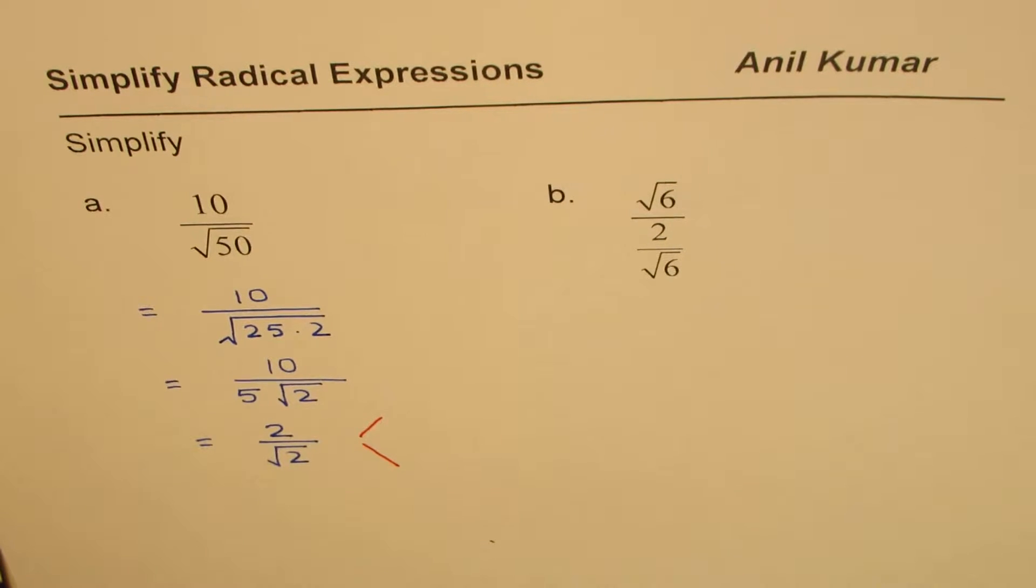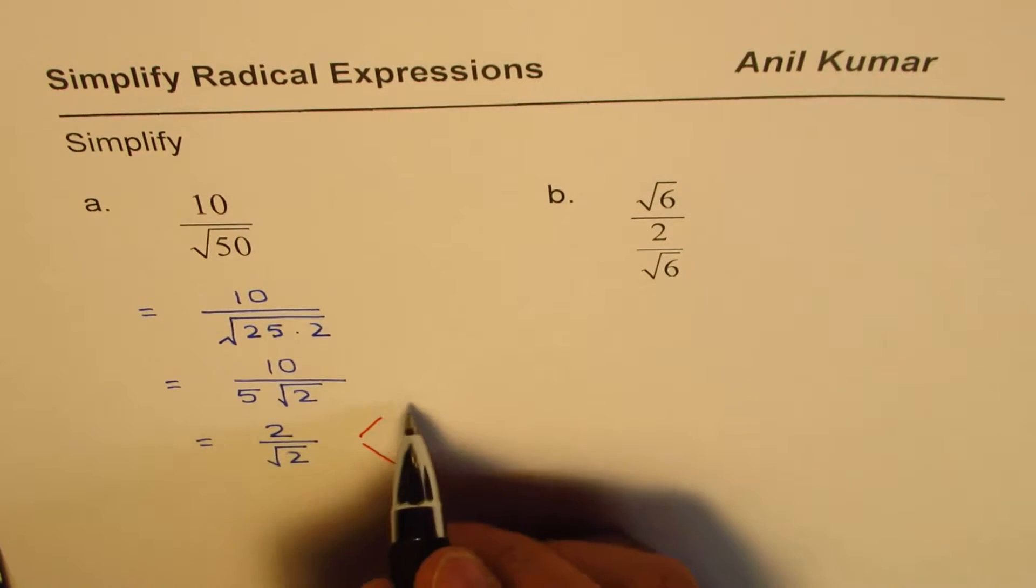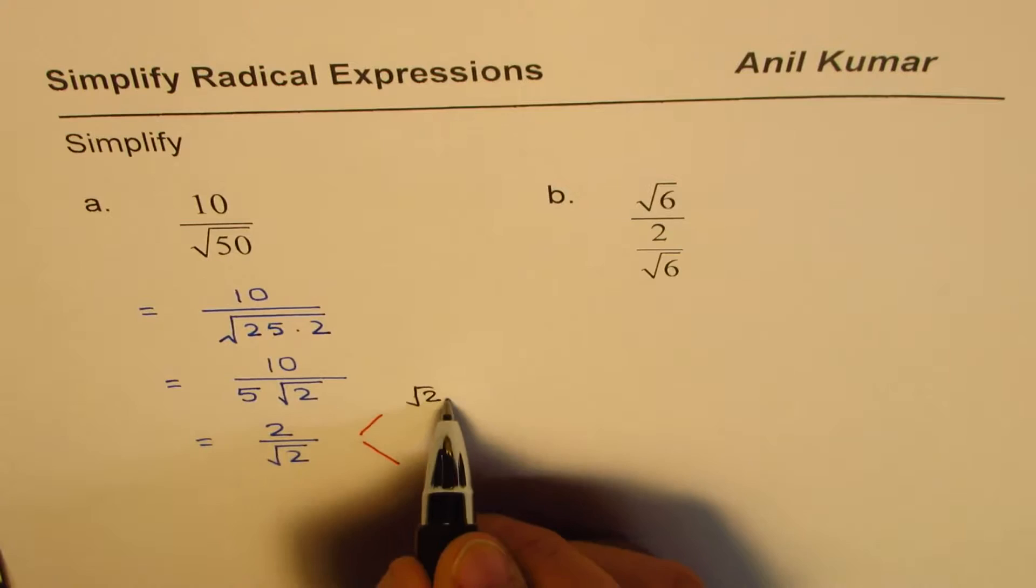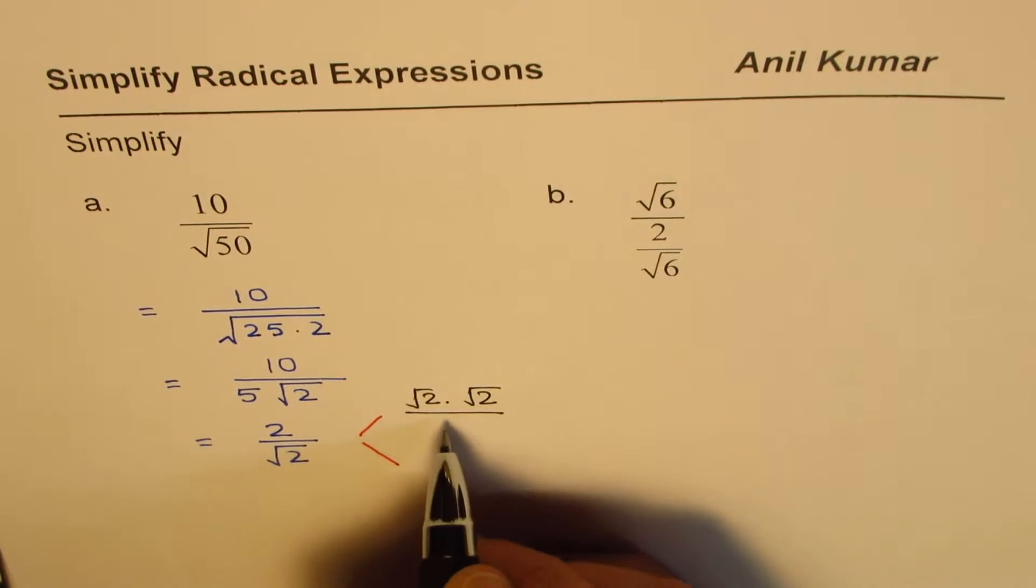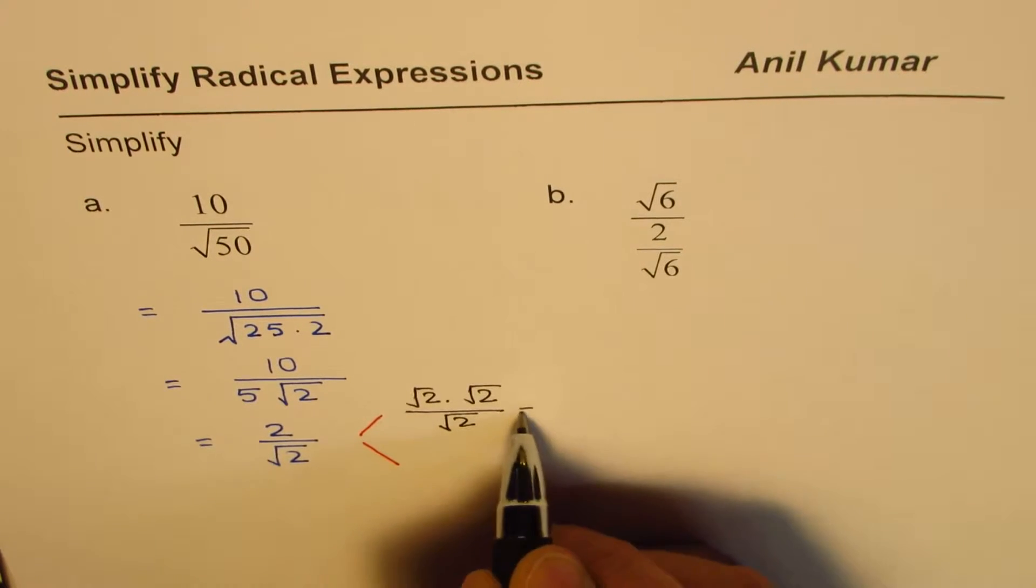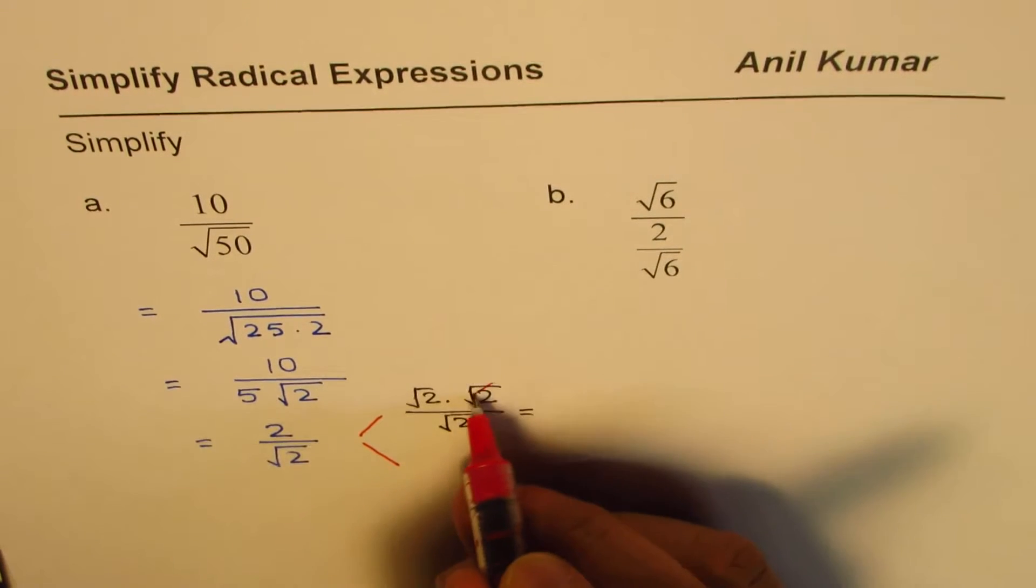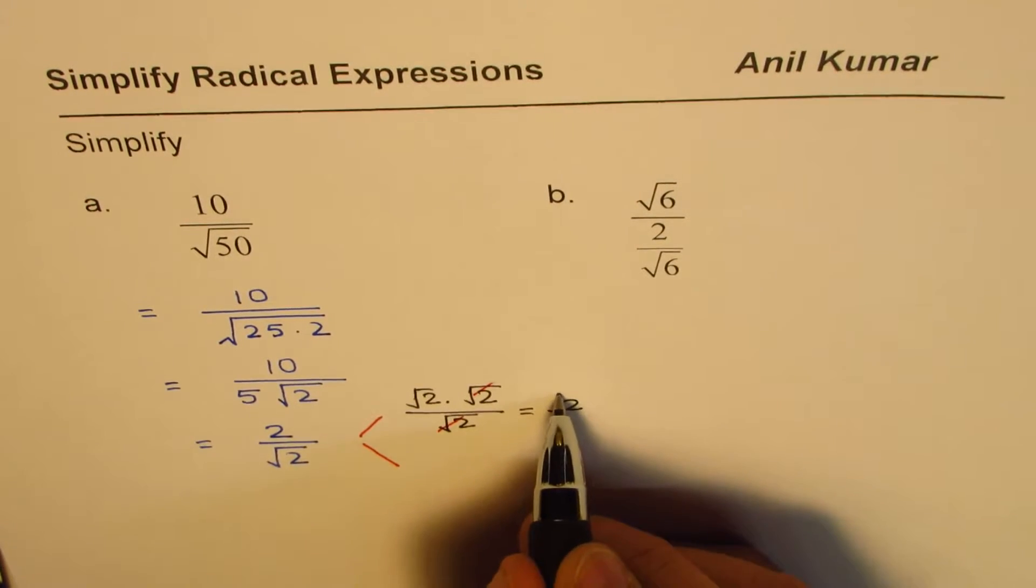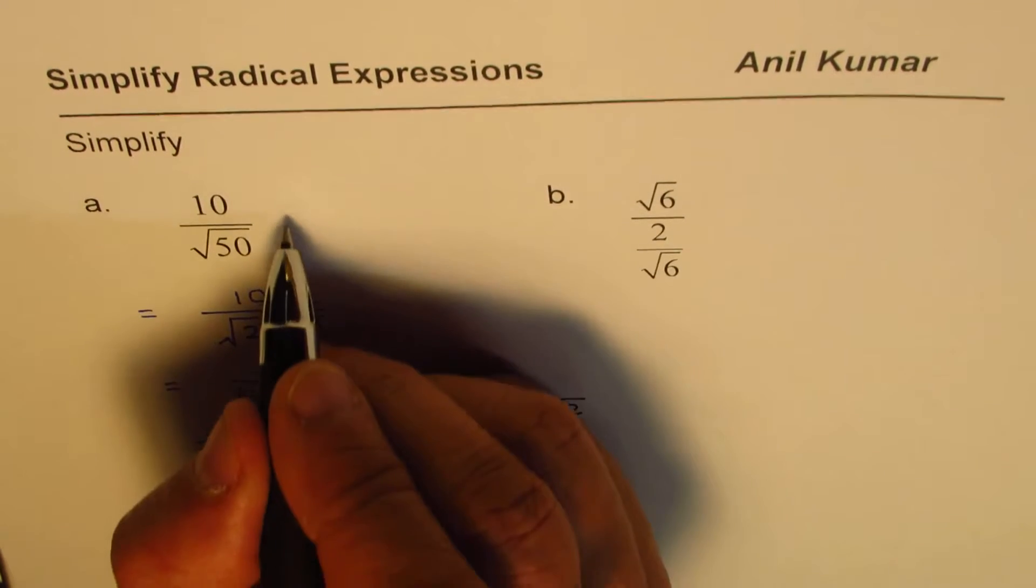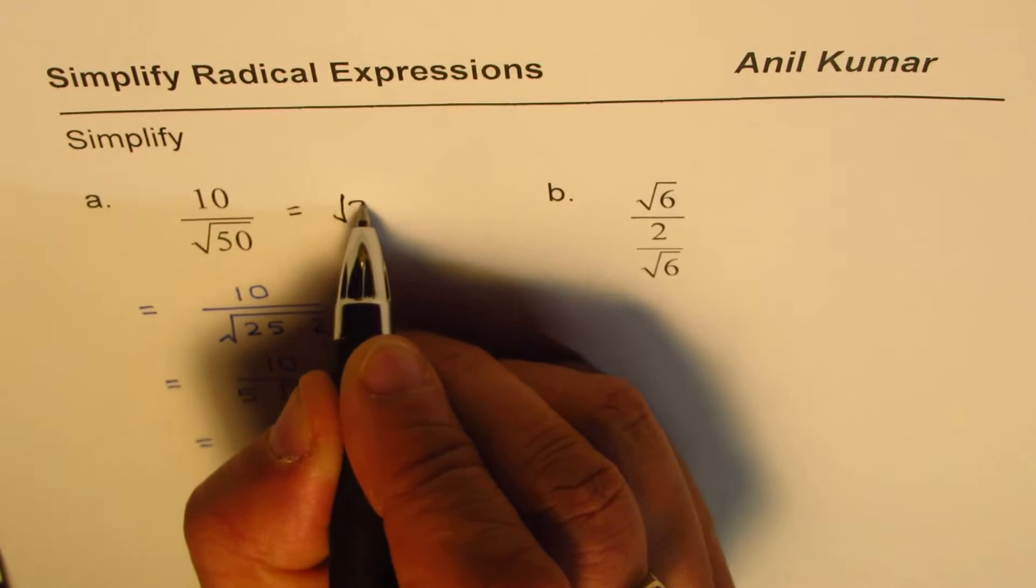One is think as if 2 could be written as square root 2 times square root 2. That is also 2, right? And divided by square root of 2 will give you what? You can cancel these and get square root 2, right? So that is one way you can write down your answer. Say this is equal to square root of 2.